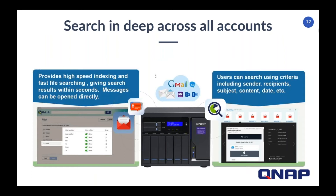You probably have a few email accounts you're managing, or maybe even many accounts. If you're searching for an old email, it could be very tedious to log into one account, run a search, go to another, and then another until you find it. To help locate emails you need, we integrate our search engine Q-Search with QMail Agent, allowing you to easily search for an email across all of your email accounts. You can search using criteria such as sender, recipient, subject, content, and date. Not only can you search the content of emails across multiple accounts, but you can also search the content of attachments across multiple accounts.